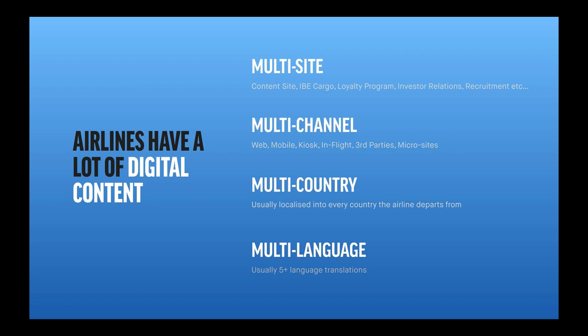We also have the multi-channel issue, where we're publishing not only to web but to dedicated mobile apps, kiosk interfaces, and potentially in-flight entertainment and information systems. We might want to publish content to third parties so they can help sell our products. And for marketing reasons, airlines often create a number of different microsites. So the airline's editorial content needs to be published, distributed, and managed across quite a large number of different digital properties.